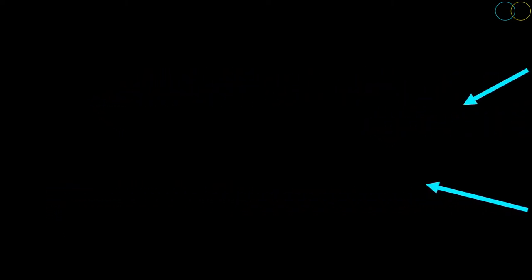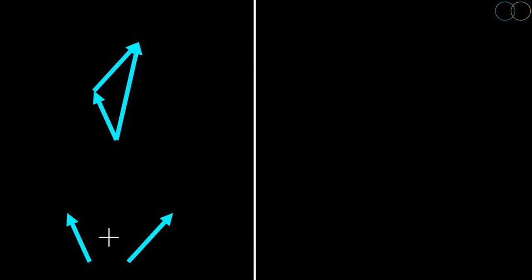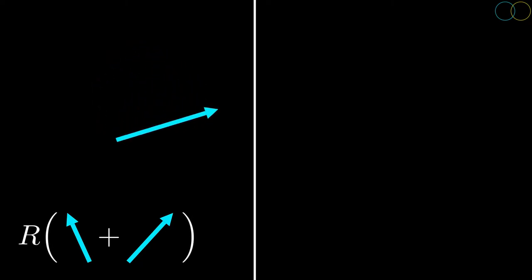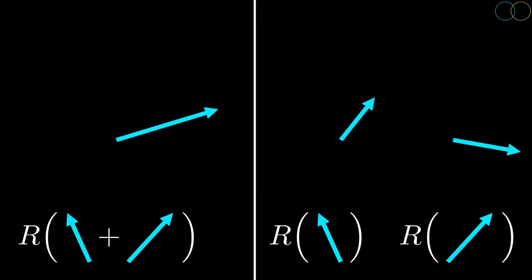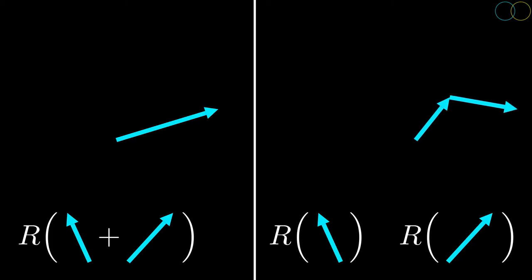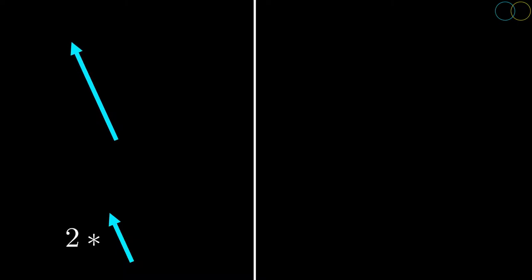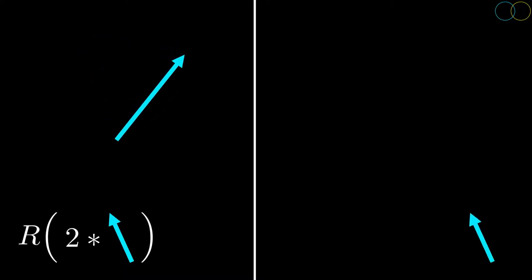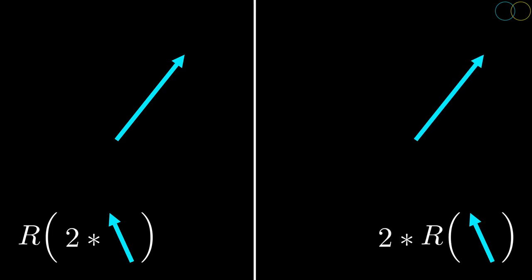This rotation transformation has some neat properties. First, adding two vectors and then applying the rotation to the result is the same thing as applying the rotation to each vector individually and then adding the result. Second, scaling a vector and then rotating gives the same result as applying the rotation to the original vector and then scaling it. In short, rotating a linear combination of vectors is the same as the linear combination of rotating each vector.